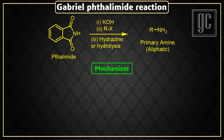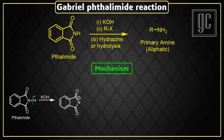Now we are going to discuss the mechanism of this reaction. In the presence of basic conditions, the acidic hydrogen is removed and a negative charge is generated on the nitrogen atom. This nitrogen anion attacks on haloalkanes and substitutes the halo group, forming N-alkyl-thalamide.